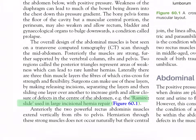The overall design of the abdominal muscles is best seen on transverse CT scan through the mid-abdomen. Posteriorly the muscles are strong, further supported by the vertebral column, ribs, and pelvis. Two regions called the posterior triangles represent areas of weakness which can lead to rare lumbar hernias. Laterally there are three thin muscles whose fibers crisscross for strength and flexibility. Surgeons can make use of these layers by making releasing incisions, separating the layers, and sliding one layer over another to increase girth and allow closure of defects.